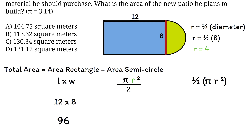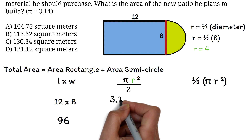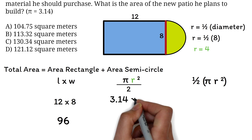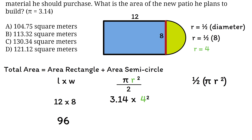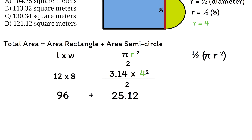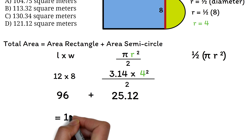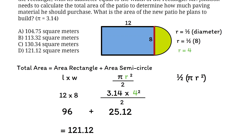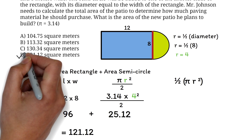We put 4 into the formula: 3.14 times 4 squared, divided by 2, which works out to 25.12. Adding the two areas: 96 plus 25.12 gives us 121.12 square meters. So the correct answer is option D.